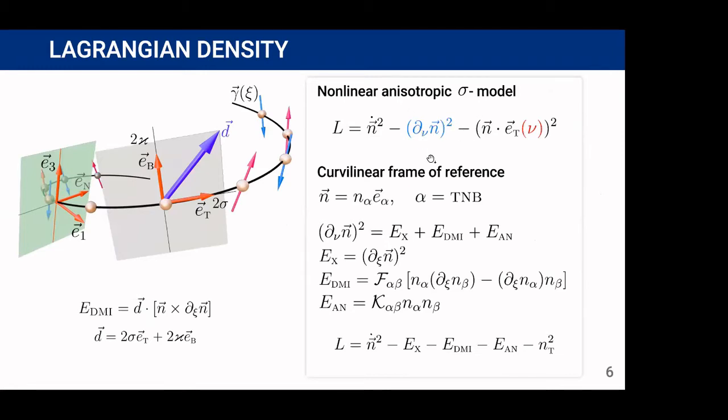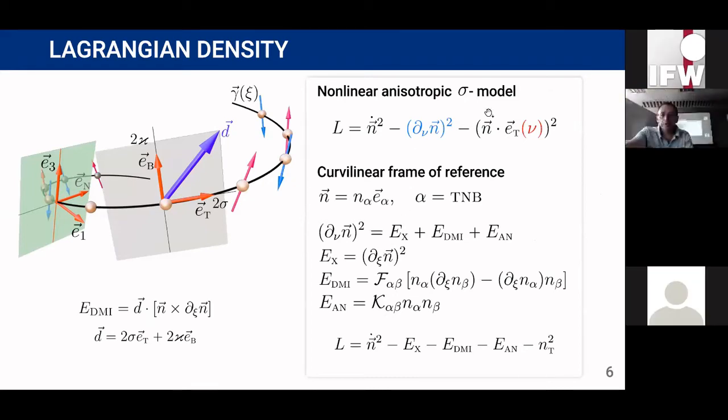In curved system, the exchange energy term can be presented in the form of three terms. The second term has a form of effective Dzyaloshinskii-Moriya interaction with coefficients which are linear with respect to the torsion and curvature, and third term has a form of effective anisotropy with coefficients quadratic with respect to the curvature and torsion.